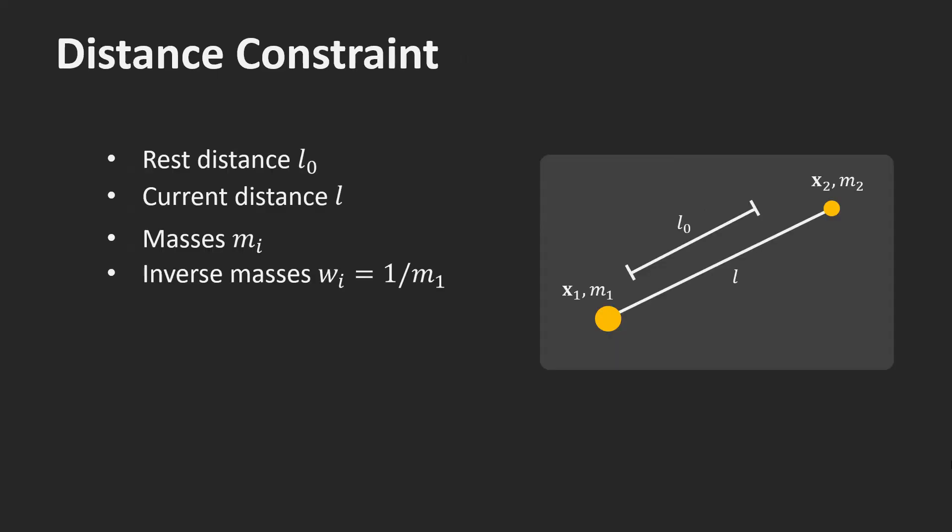Let us have a look at the special case of a distance constraint. Here we have two particles with position x1 and x2 and masses m1 and m2. We use the letter w for the inverse mass 1 over m. L0 is the rest or target length of the constraint and L its current length. Our goal is to move the particles such that the distance constraint is satisfied. In this case, we have to move them closer together.